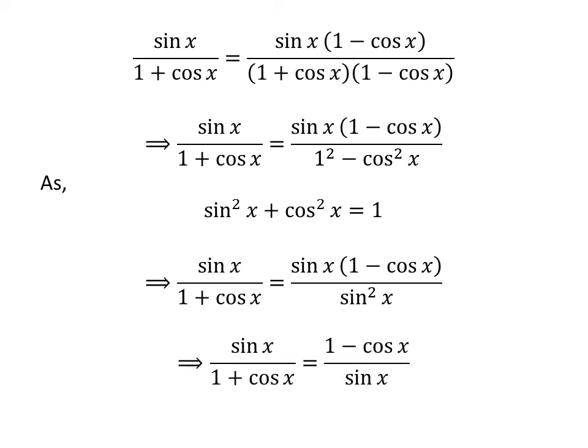Cancelling out the common factor sine of x in the numerator and the denominator of the right hand side of the above equation gives us sine of x upon 1 plus cosine of x is equal to 1 minus cosine of x upon sine of x. Thus, the equation has been proved.